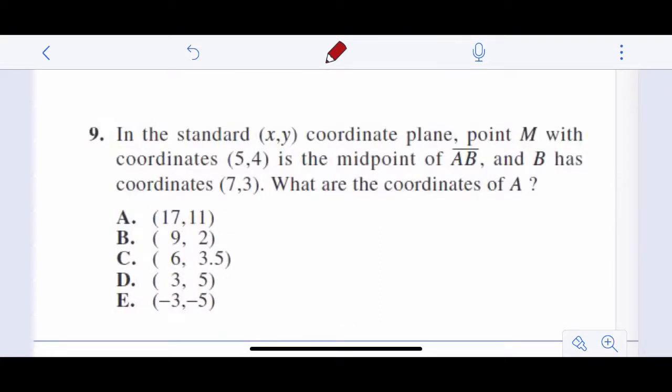So let's look at our first one. In the standard x, y coordinate plane, point M with coordinates 5, 4 is the midpoint of AB. So we have a line AB, and 5, 4 right here is the midpoint.